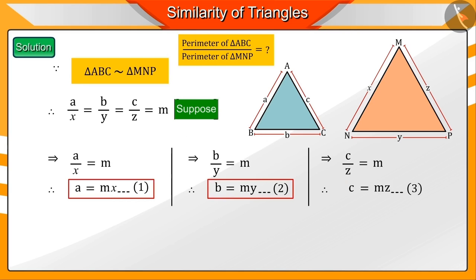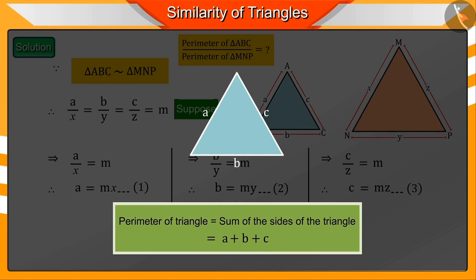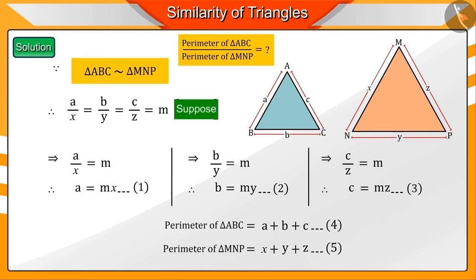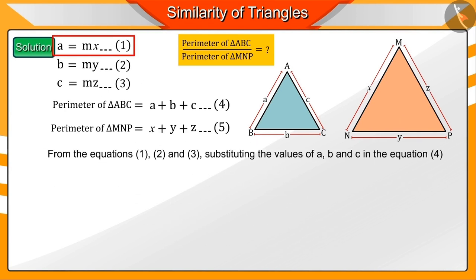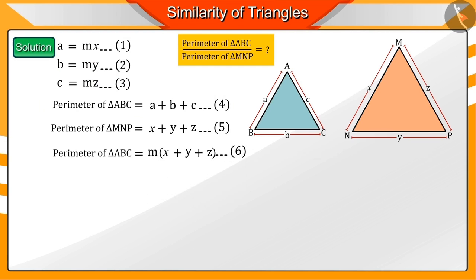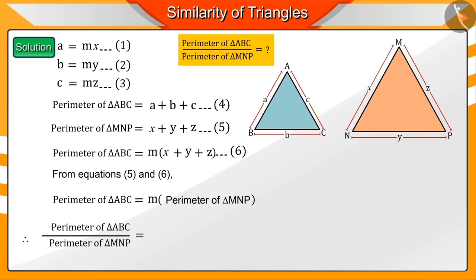From the similarity ratio we get equations 1, 2, and 3. We know that the perimeter of a triangle is equal to the sum of its sides, giving us equations 4 and 5. Substituting the values of a, b, and c from equations 1, 2, and 3 into equation 4 and solving, we get equation 6. From equations 5 and 6 we can say that the ratio of the perimeters of these two triangles is M.